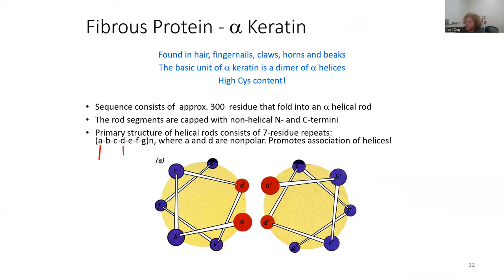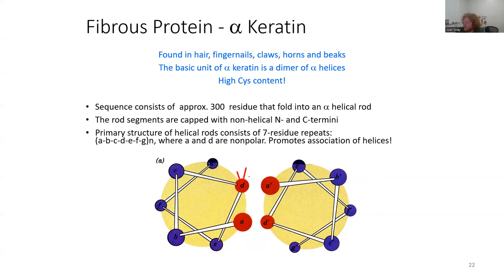Those non-polar residues are positioned so that A ends up opposite D and D opposite A between the two subunits. Good examples are non-polar residues like valine and alanine or isoleucine. Those residues are going to attract one another — they're non-polar and they're going to push away any water, so they'll have a very strong hydrophobic interaction that brings them together. That's going to repeat over and over, giving a huge number of interactions driving these subunits together.